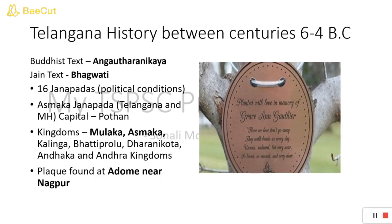There is a Janapada called Asmaka Janapada, one of those 16 Janapadas. Since a Janapada is the territory of certain people staying in that area, we need to understand its boundaries. It is expanded between Telangana's Nizamabad district and Maharashtra's Nanded district. Between these boundaries lies the territory called Asmaka Janapada.